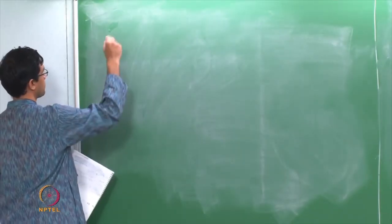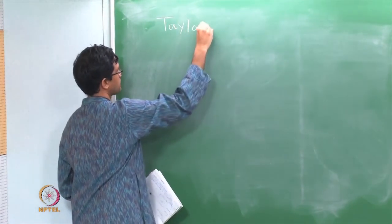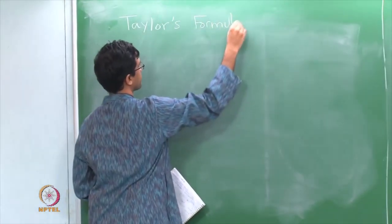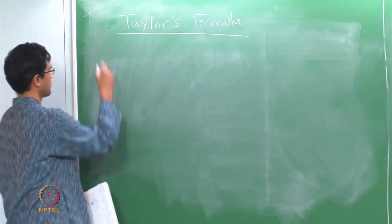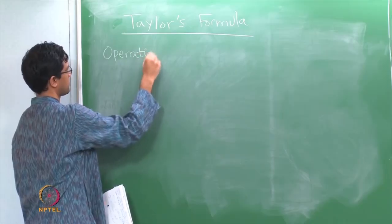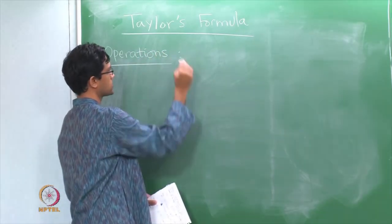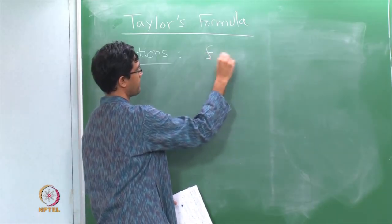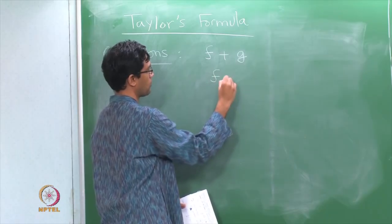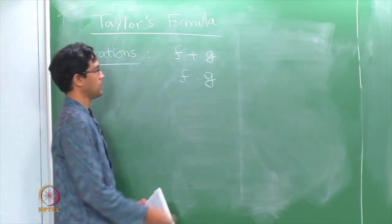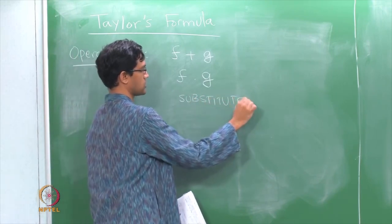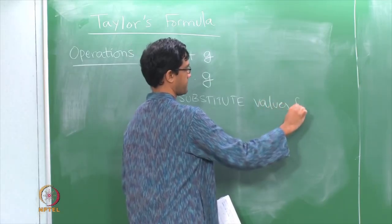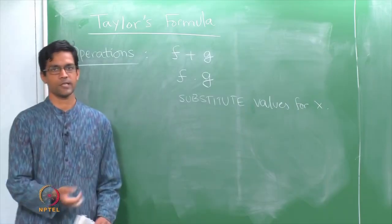Welcome back. Here is the next thing we will do with polynomials. I want to talk about something called Taylor's formula, but before I do this, let us quickly recall what operations we have defined on polynomials. Given two polynomials f and g, we had the following: we defined what the sum means, what the product of those two polynomials means, and there is another thing — substitution, substituting values for x, the variable. These are more or less the three things we have done so far.